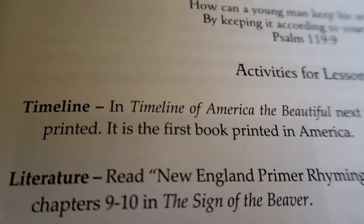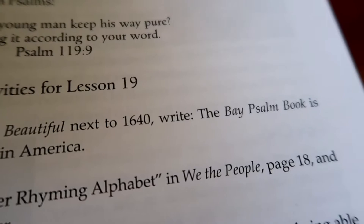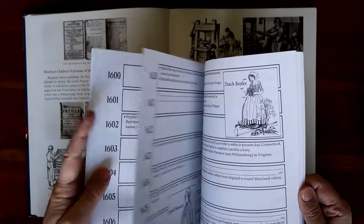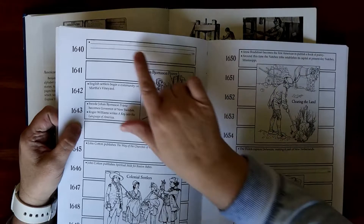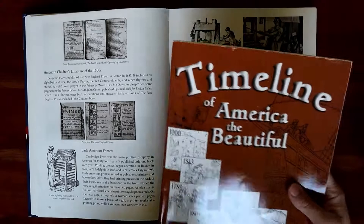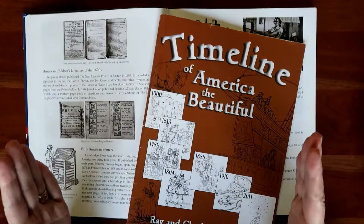In this lesson it also covers timeline. In Timeline of America the Beautiful, next to 1640, write: the Bay Psalm Book is printed — it is the first book printed in America. You just go to your timeline book and find 1640, and they write that in. It does put some entries in there for you already. This is such a great learning tool because it helps them to place everything in history in the timeline, so they get a better grasp of when things happened and how everything coincides.